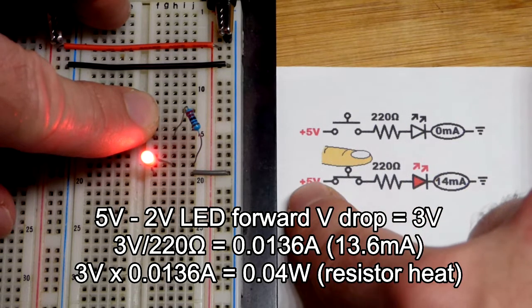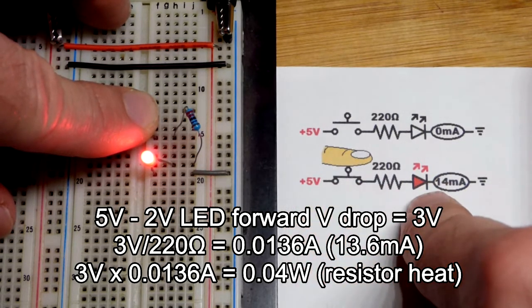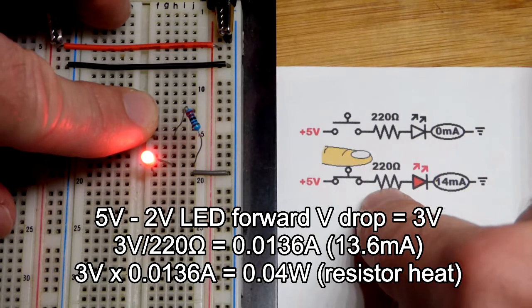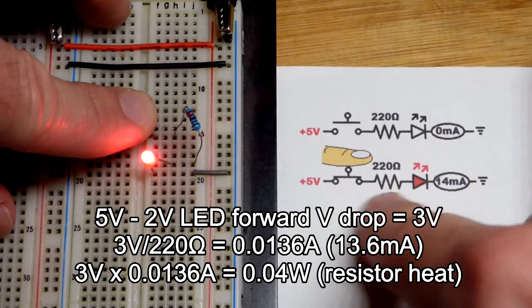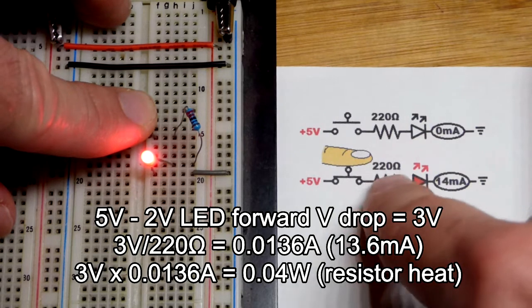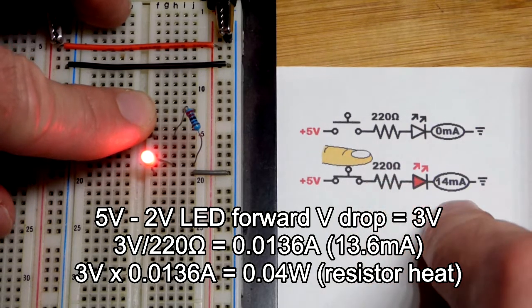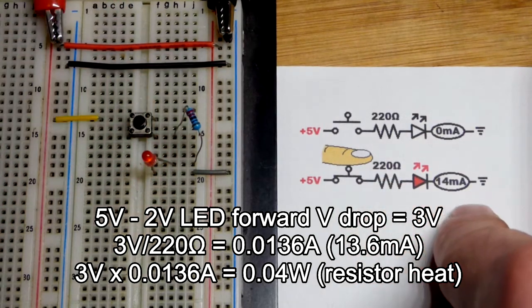That's because we have a 5-volt power supply. The LED is dropping about 2 volts, because it's red, leaving 3 volts across the 220 ohm resistor. You use Ohm's law to calculate the current. 3 divided by 220 is a little less than 14 milliamps of current.